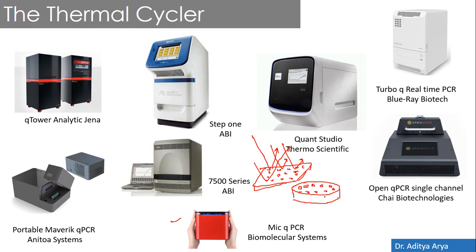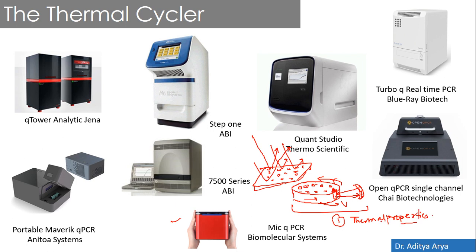The Rotor-Gene format has a unique mechanism where tubes are placed in a circle and rotated. When a tube reaches the center, a laser can measure it. The advantage of the Rotor-Gene is that it can scan each tube individually, making the thermal cycling much faster. Optical sensing and detection are also much more efficient in this format compared to traditional flat-plate systems.